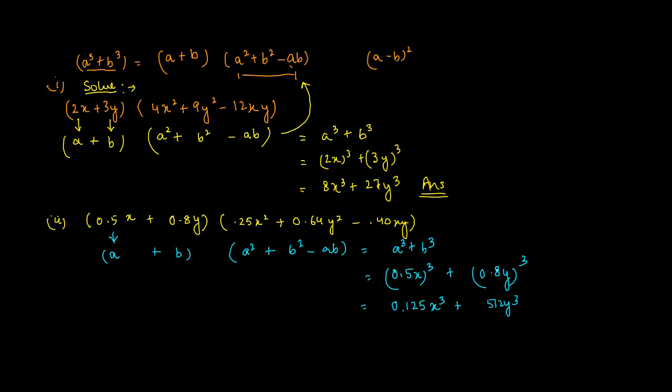Plus y cube: 8³ is 8 times 8 is 64, 64 times 8 is 512. Again when you multiply 0.8 three times, there are three decimal places, so you put this as 0.512y³, which is the answer.